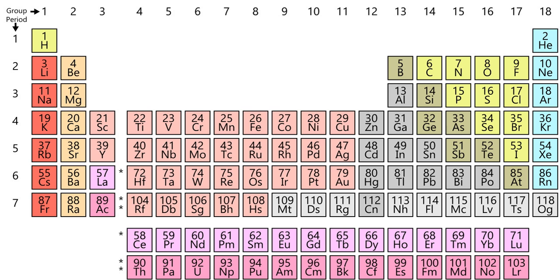For example, the three familiar allotropes of carbon, amorphous carbon, graphite, and diamond, have densities of 1.8–2.1, 2.267, and 3.515 grams per cubic centimeter, respectively.